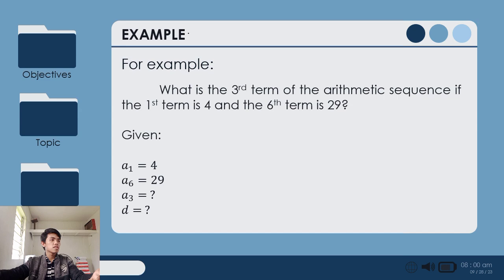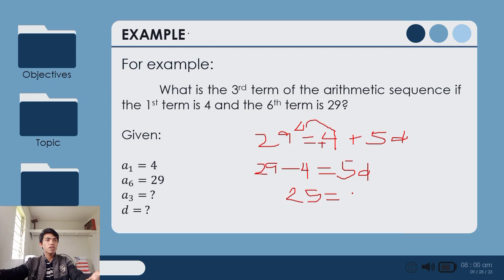Next, 29 equals 4 plus 5d. By using transposition, katranspose natin yung 4 dito sa left, which is from positive 4 to negative 4. So 29 minus 4 is 25 equals 5d. By dividing both sides by 5, para makuha natin yung value ng d, 25 divided by 5 equals 5. So 5 equals d. Yung common difference natin is 5.